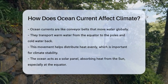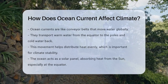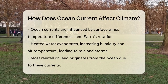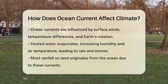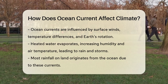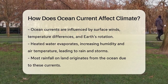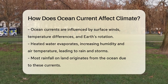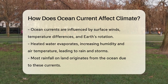Imagine the ocean as a huge solar panel, especially around the equator. Here it absorbs most of the sun's radiation, storing heat that would otherwise be lost into space. This heat is then distributed by ocean currents, which are driven by surface winds, temperature differences, and the Earth's rotation. When water is heated, it evaporates, increasing the humidity and temperature of the surrounding air.